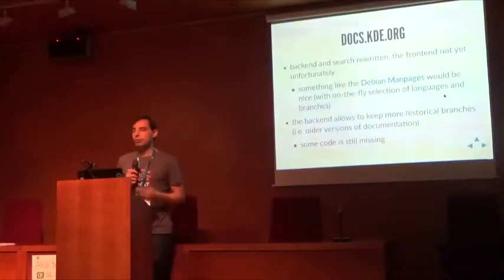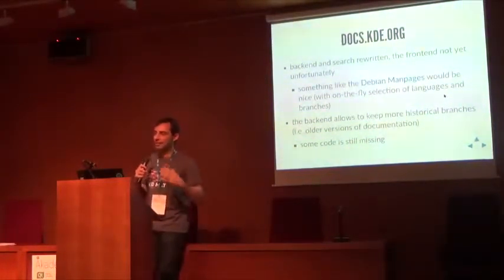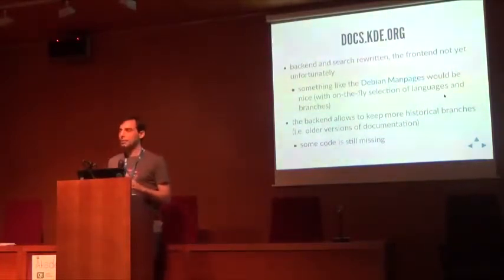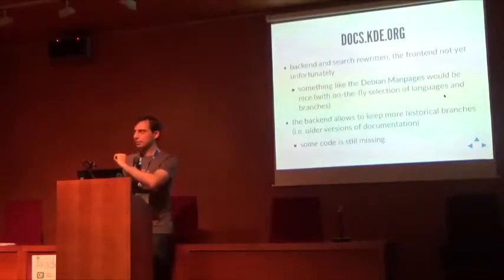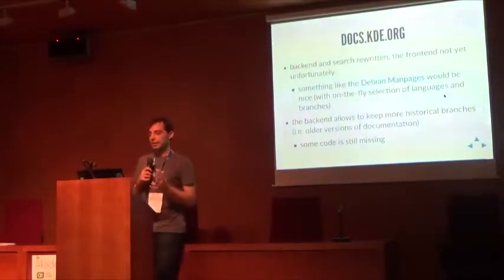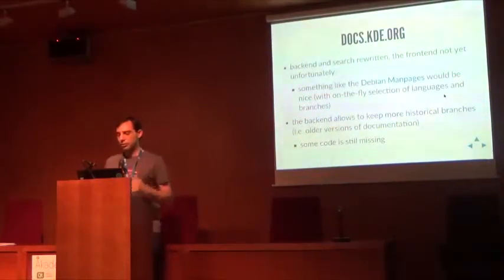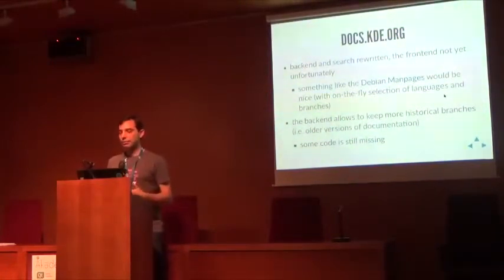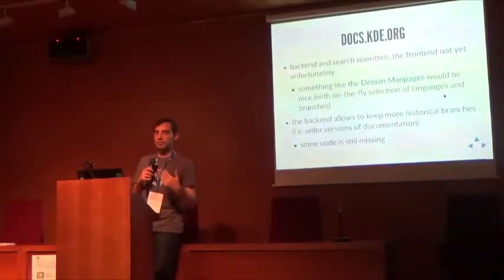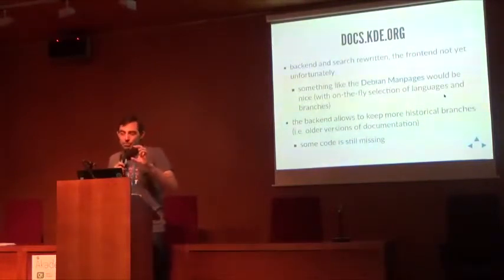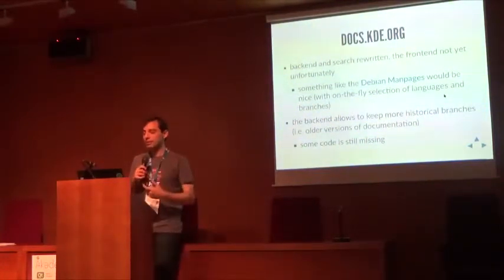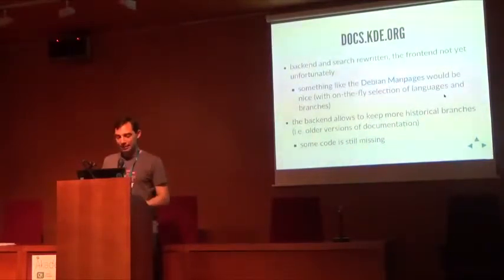The website — as I mentioned, the backend was rewritten. We need to do the frontend and make something nice where you can set the language and different versions on the fly. That needs some changes in the documentation versioning in general. The backend is capable of keeping all branches — old versions of Plasma, old versions of applications — but that piece of code is still missing, so we stopped at that point.